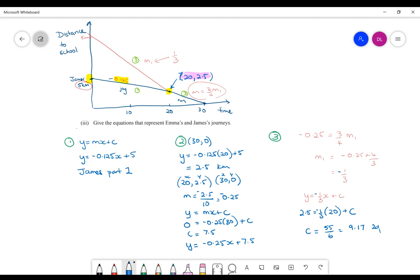So my equation will be y equals 1 third, negative 1 third, x plus 9.17. Voila.